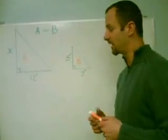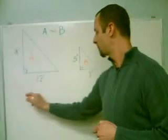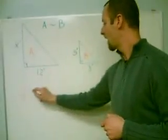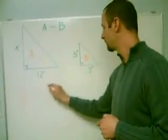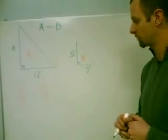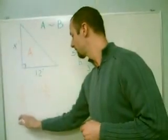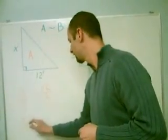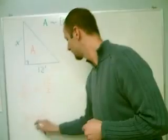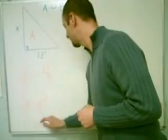We can use that information to solve for a missing side. We can write out a proportion saying that x is to 5 as 12 is to 3. These are their corresponding sides in proportion. We have a very simple proportion to solve — we cross multiply, and then divide both sides by 3 to get x equal to 20 feet.